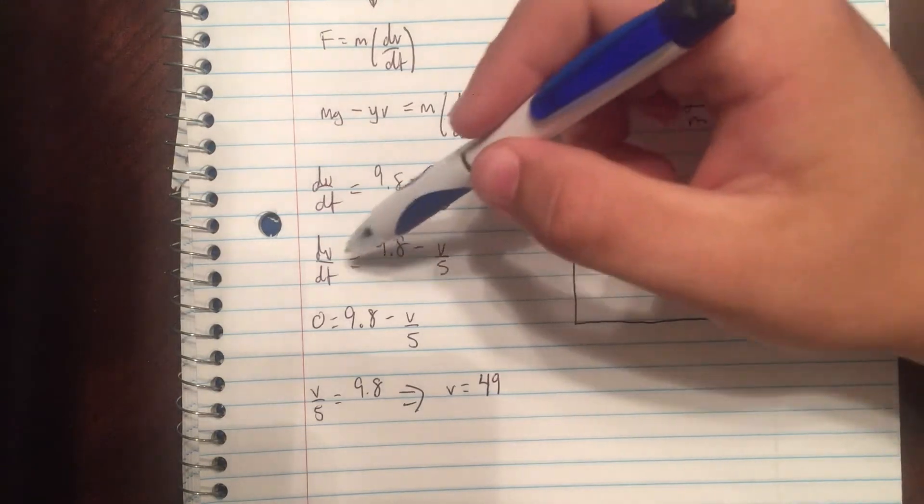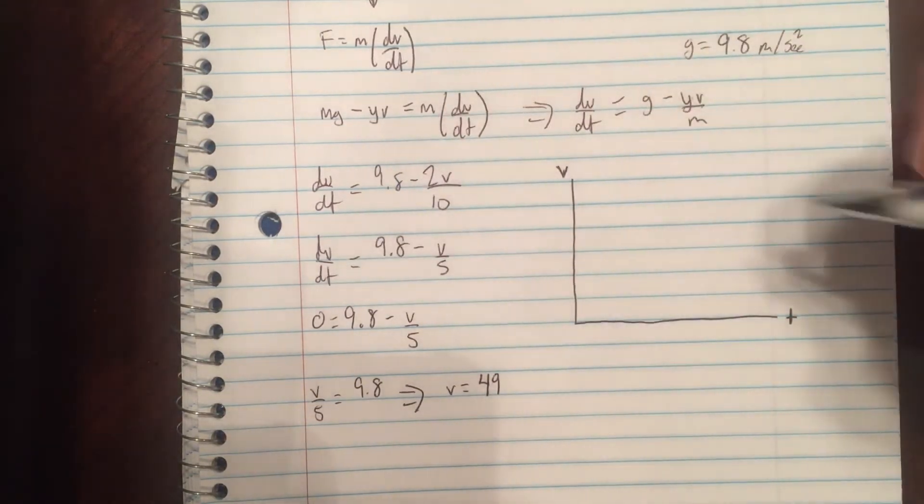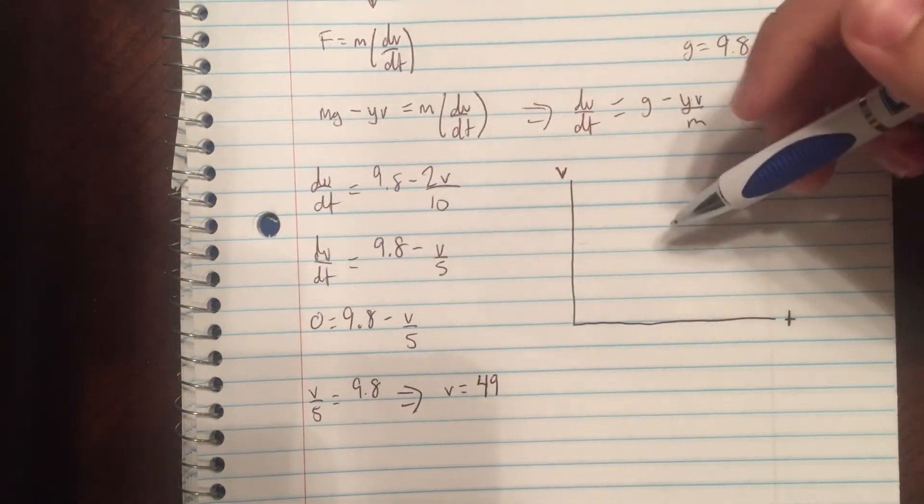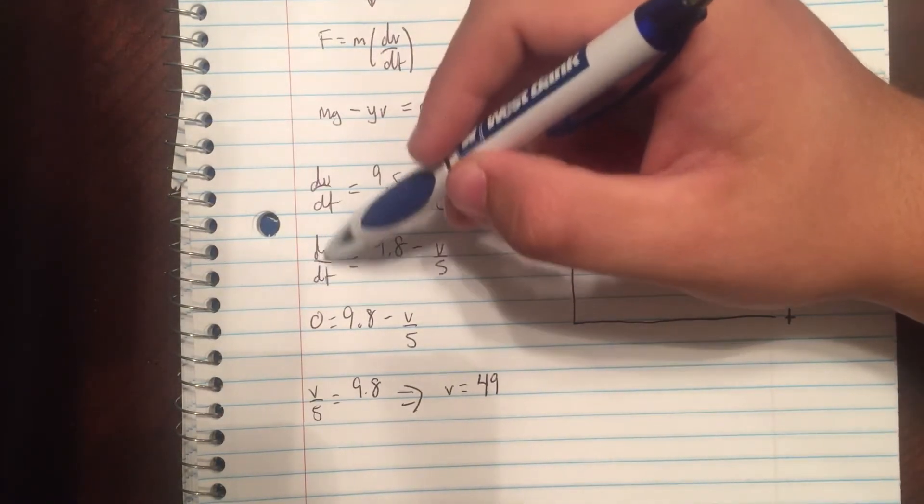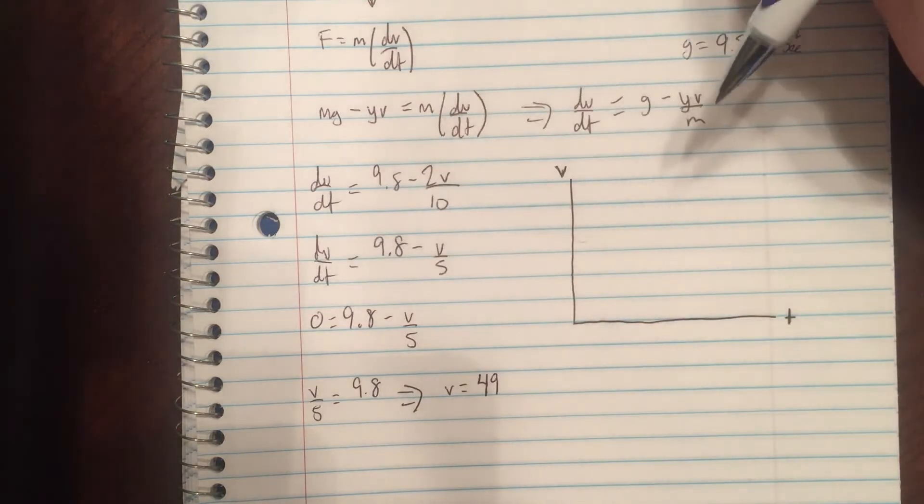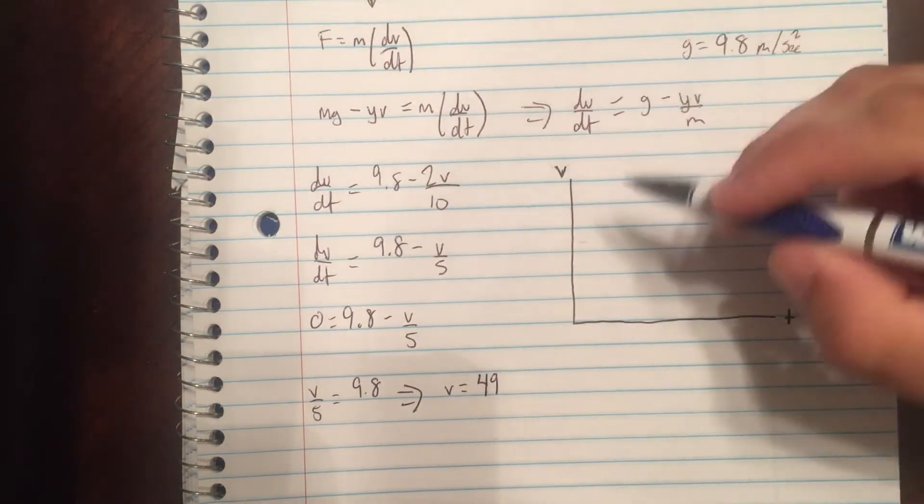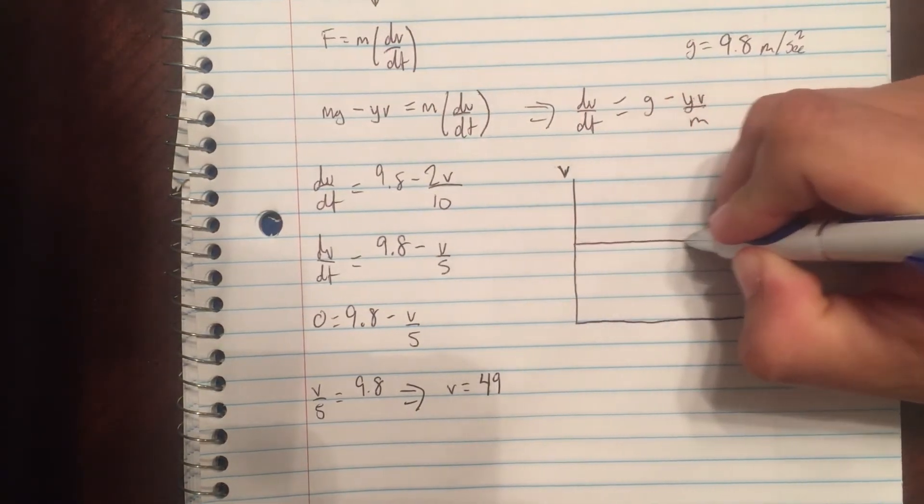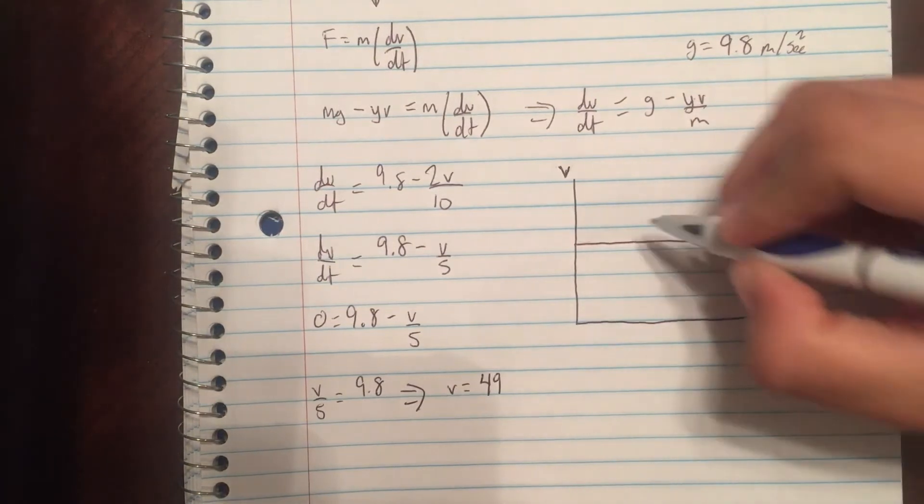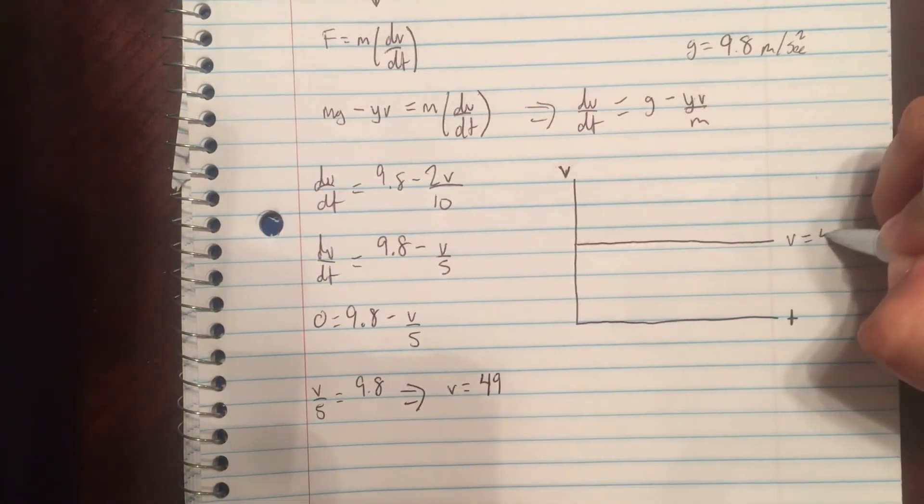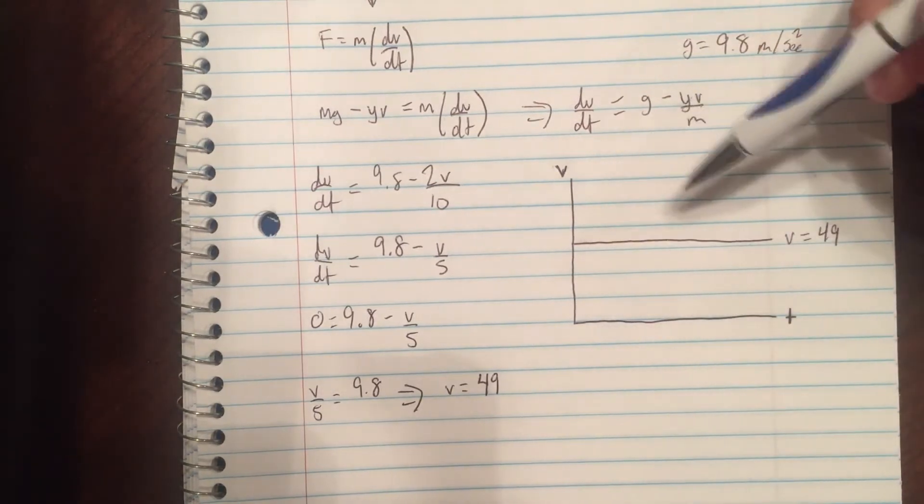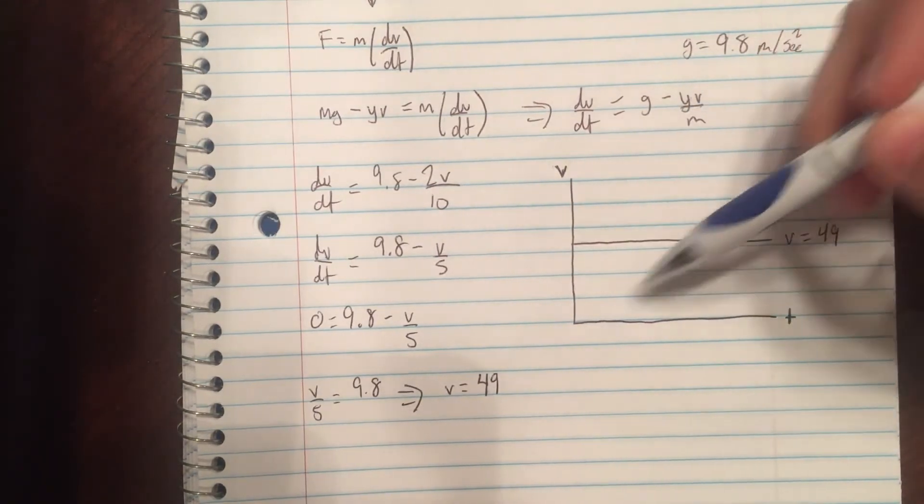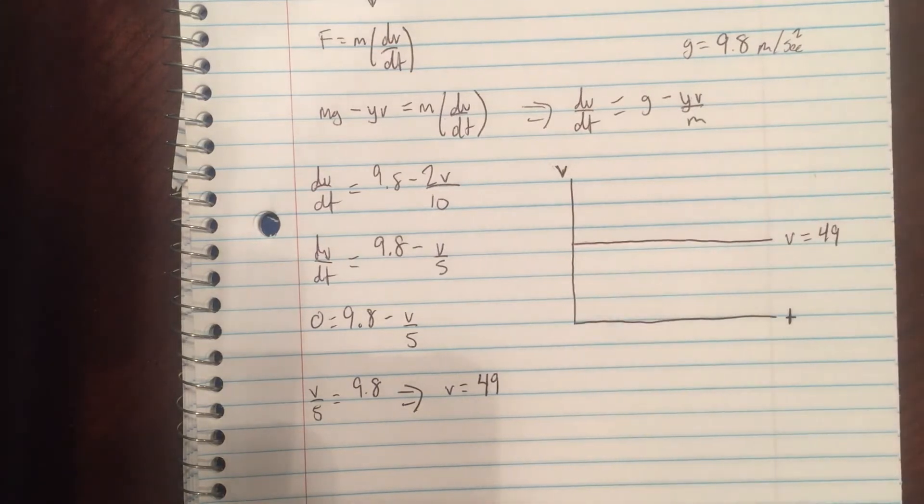What this means is the horizontal line here is going to be at 49 because that's when the slope is 0. Remember, the derivative of something is actually the slope. So we're graphing v and we know there's going to be a horizontal line at v equals 49.